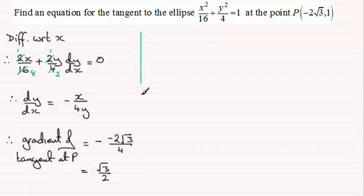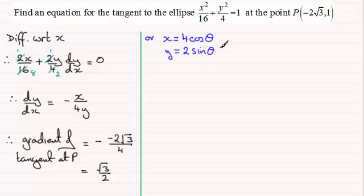The other way is to differentiate the parametric equation. So what would the parametric equation be? Well we should be familiar with x equaling a cos theta. Remember the 16 represents a squared so a would be 4. So we've got x equals 4 cos theta and the y equation would be b sine theta. b squared is 4 so b would be 2. So we've got y equals 2 sine theta. If you're unsure of the parametric form do check out my earlier videos on the parametric form for the equation of an ellipse.